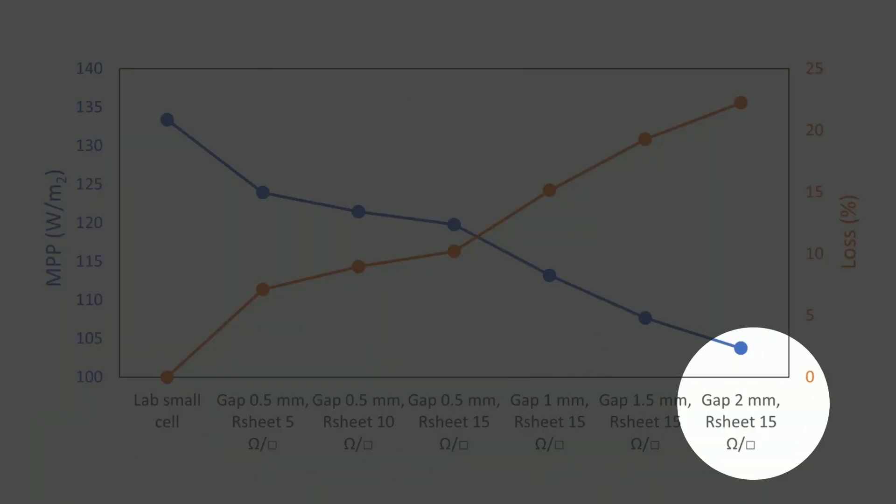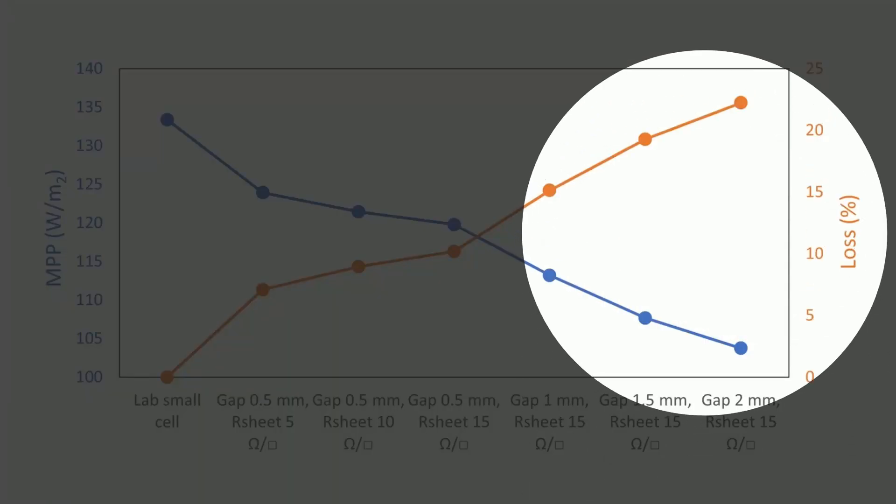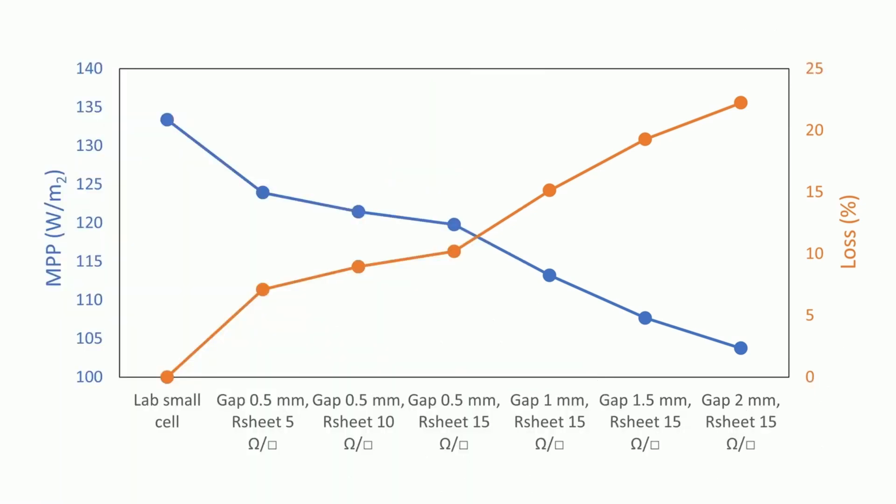Interestingly, for a module with a gap width of 2 mm and a sheet resistance of 15 ohm per square, the loss in power density surges to over 20% compared to the lab-scale cell. The steep curve of loss isn't just a visual representation, it carries a powerful insight.